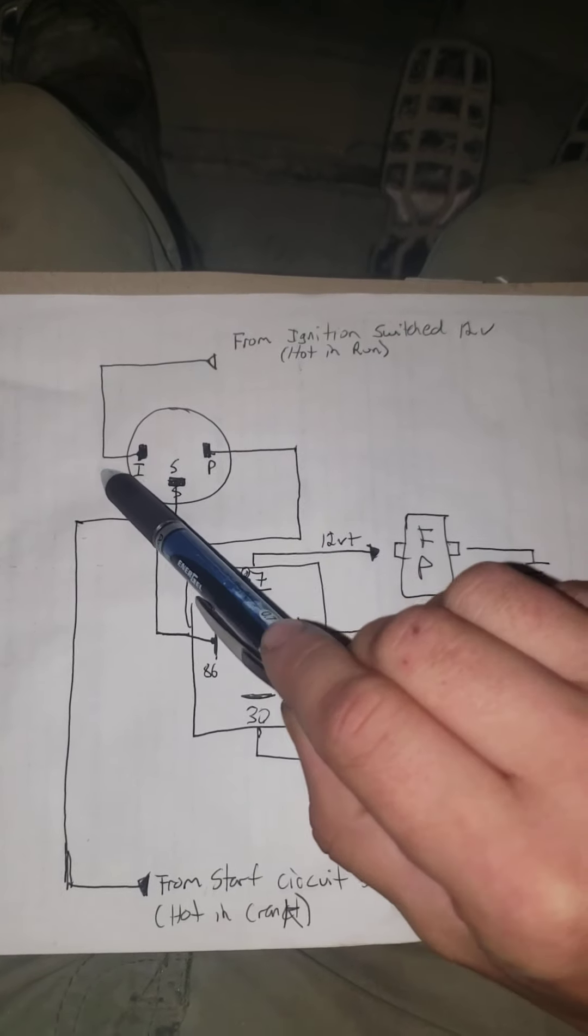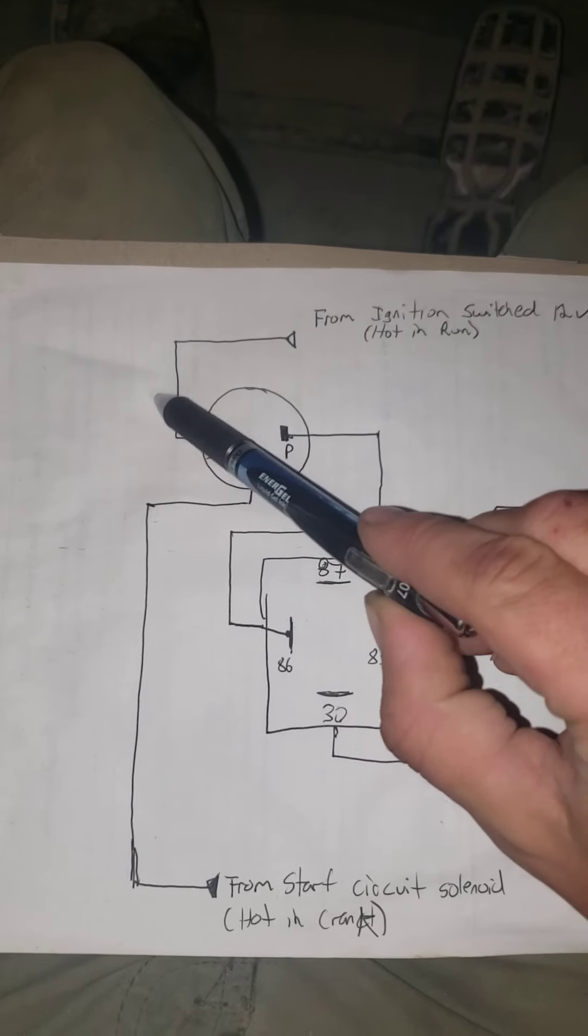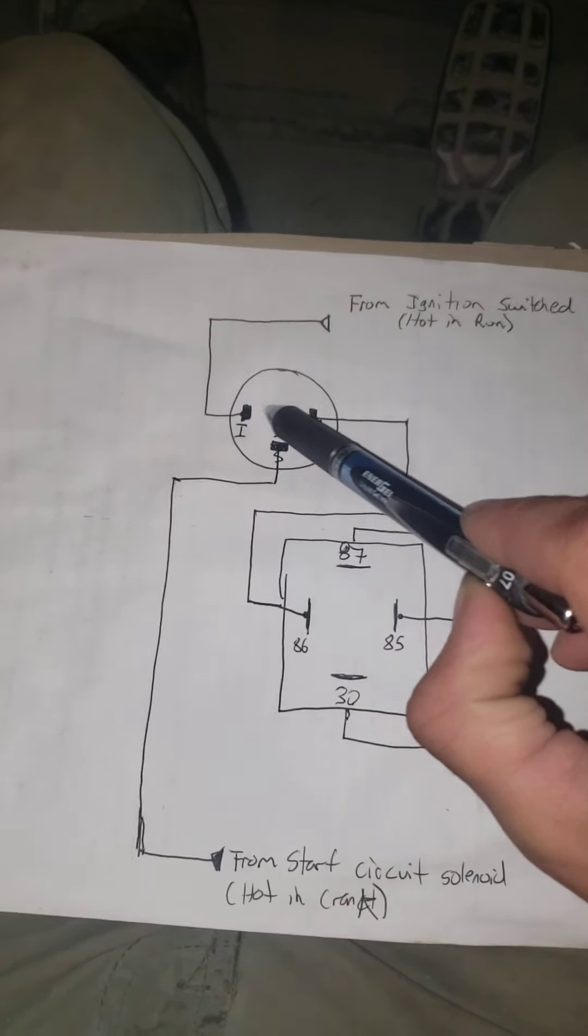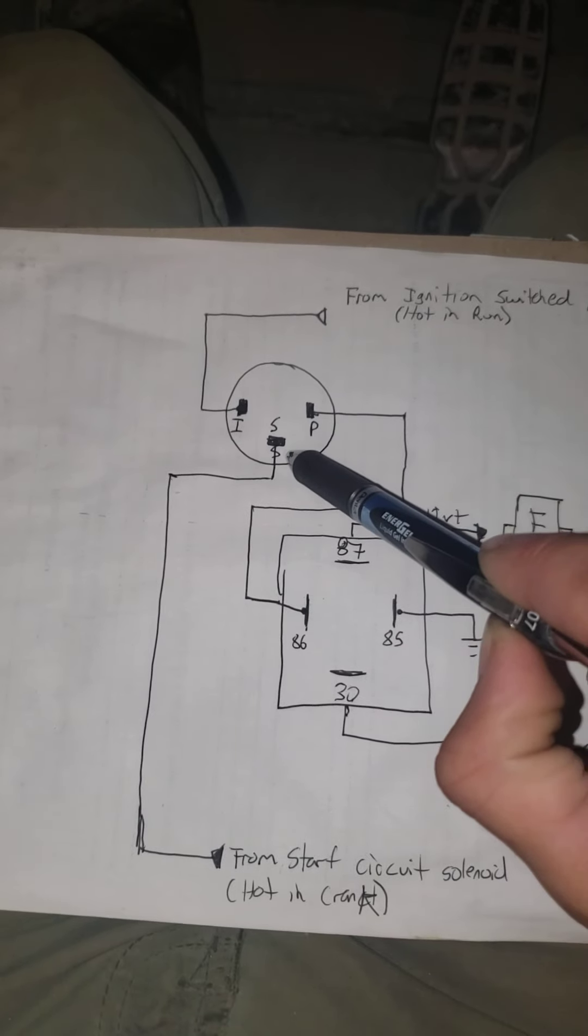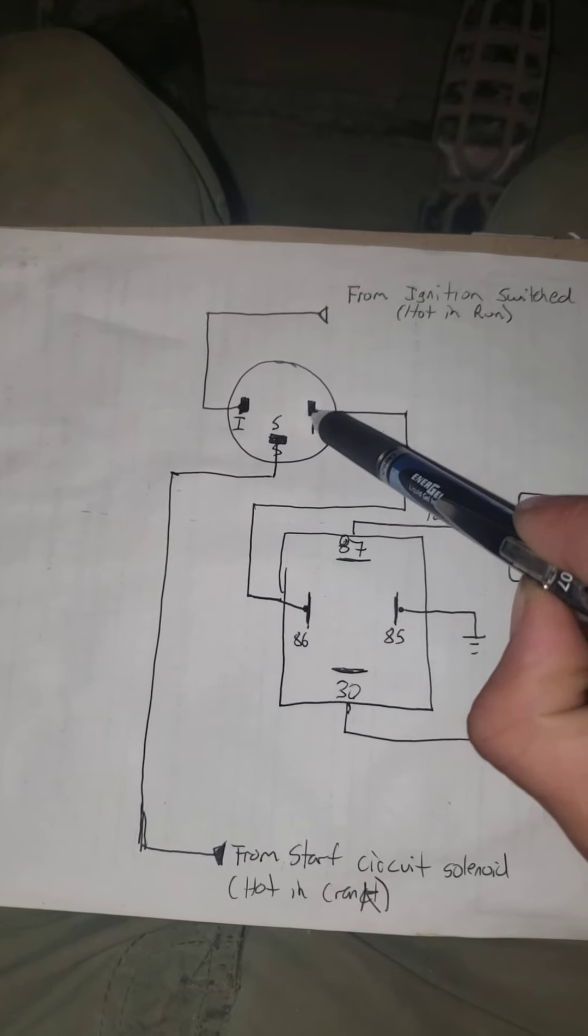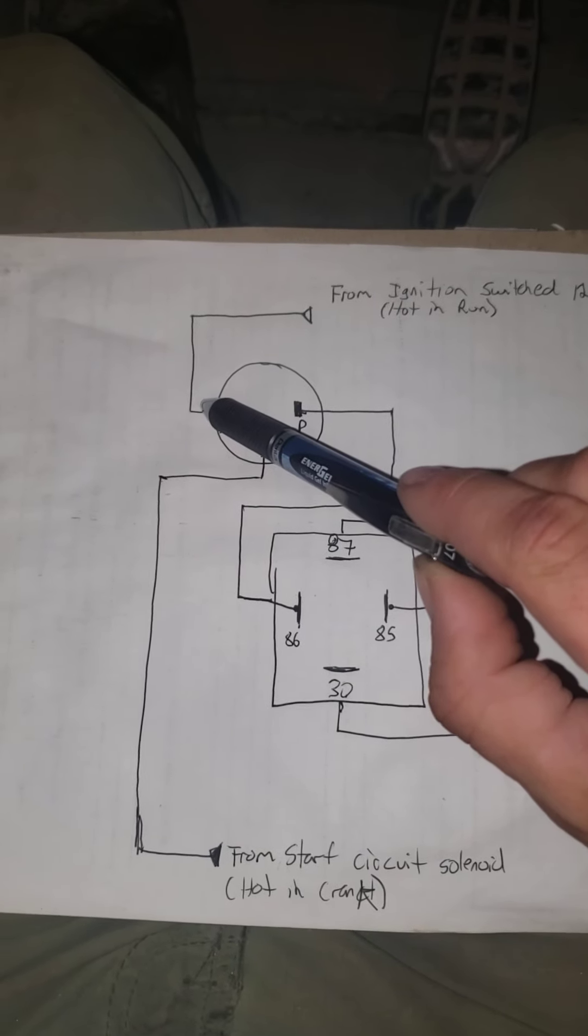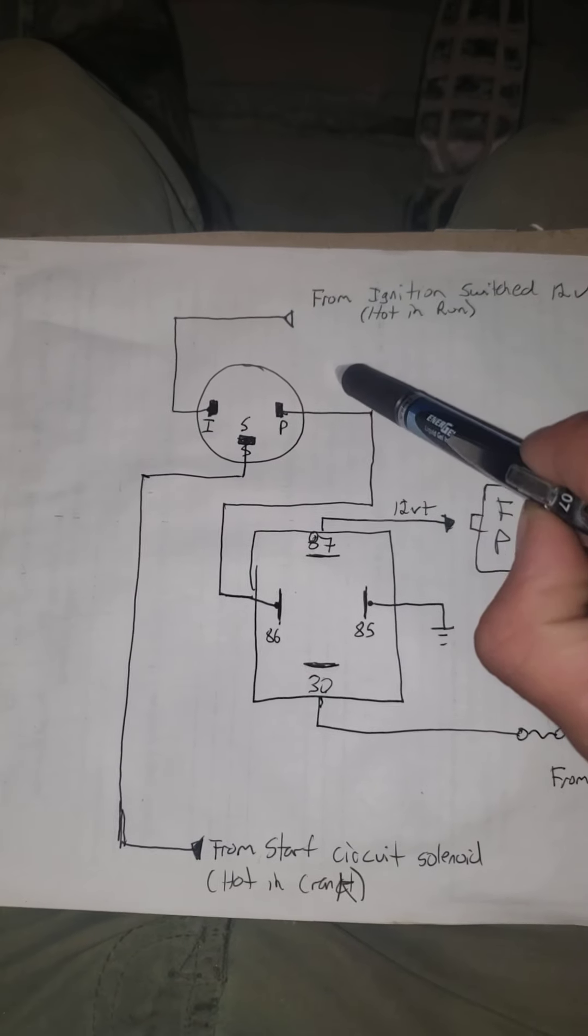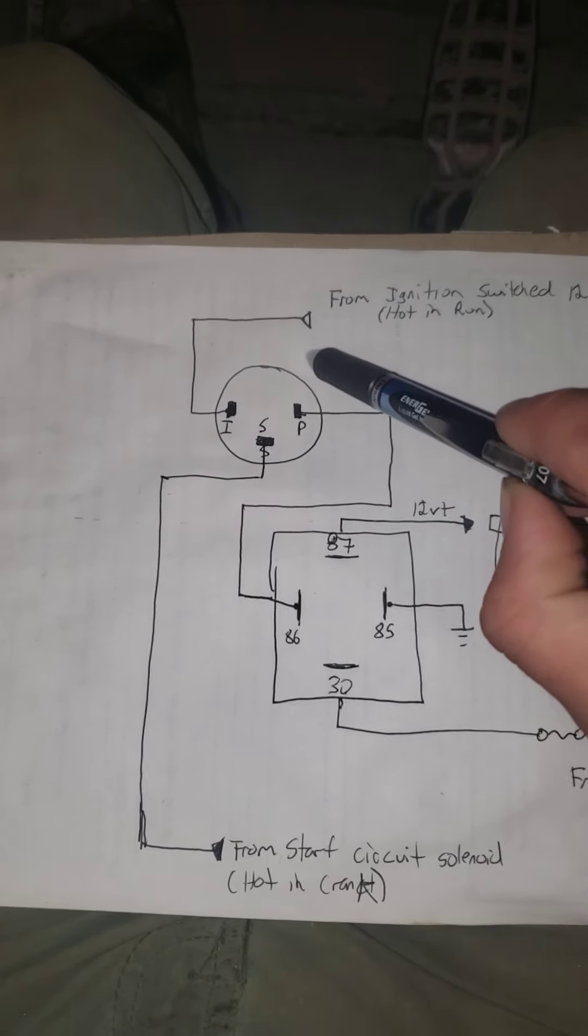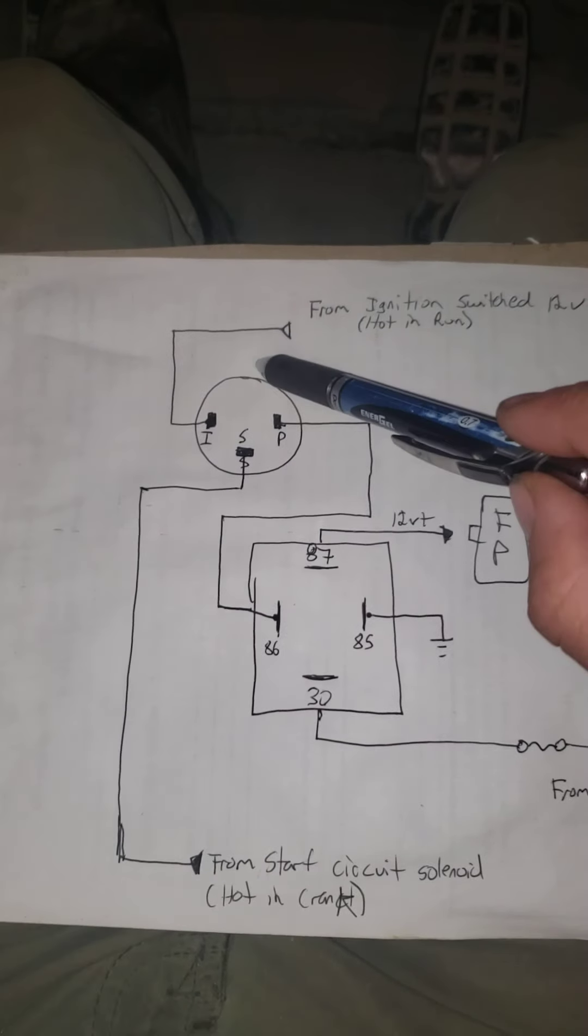Now whenever you turn your key on, you have this switched ignition source coming through this wire. It can't get across here because there's no oil pressure yet. Remember, these two contacts are connected while the engine's off. So in order to bypass this switch, they would take a wire, jump it around to this wire, but through a switch, another momentary helm switch, like up on the dash somewhere. You would push that switch,